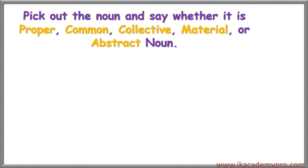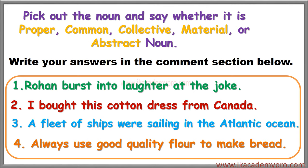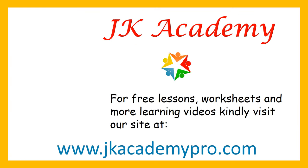Here is an exercise for you to solve. Pick out the noun and say whether it is proper, common, collective, material or abstract noun. Write your answers in the comment section below. 1. Rohan burst into laughter at the joke. 2. I bought this cotton dress from Canada. 3. A fleet of ships were sailing in the Atlantic Ocean. 4. Always use good quality flour to make bread.